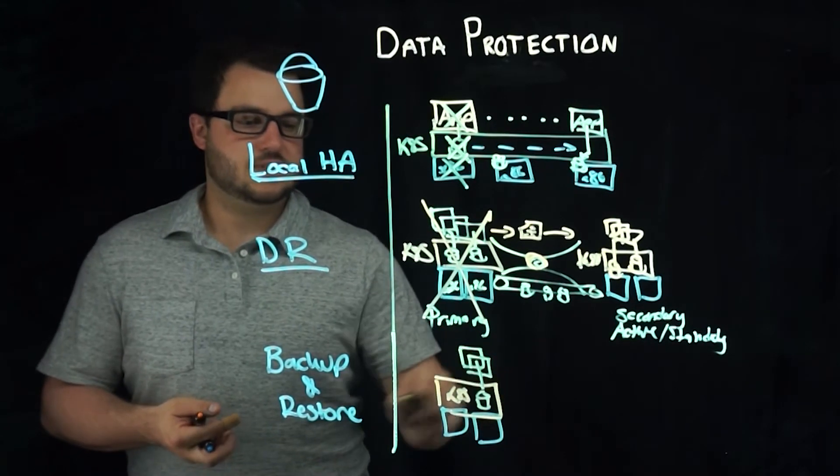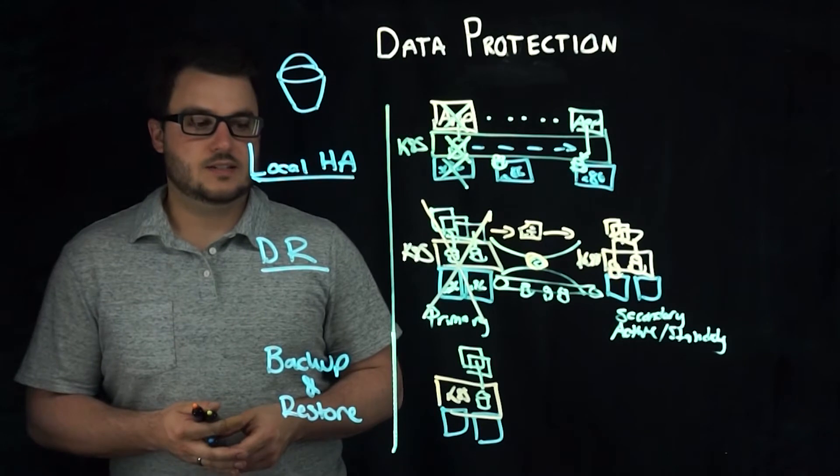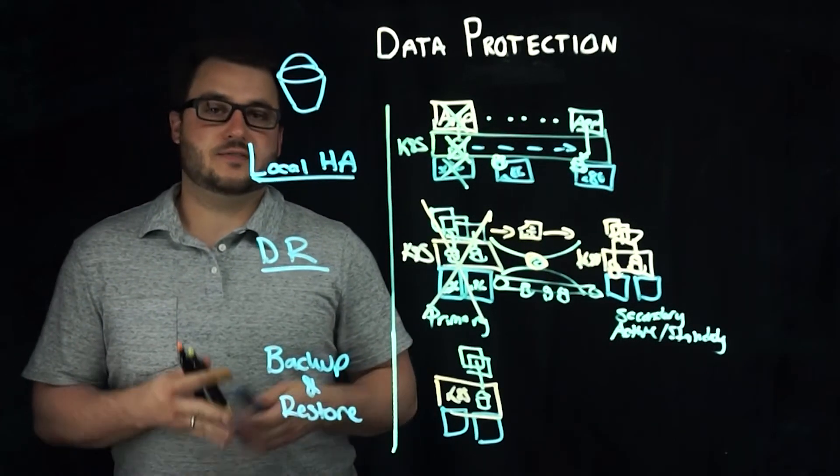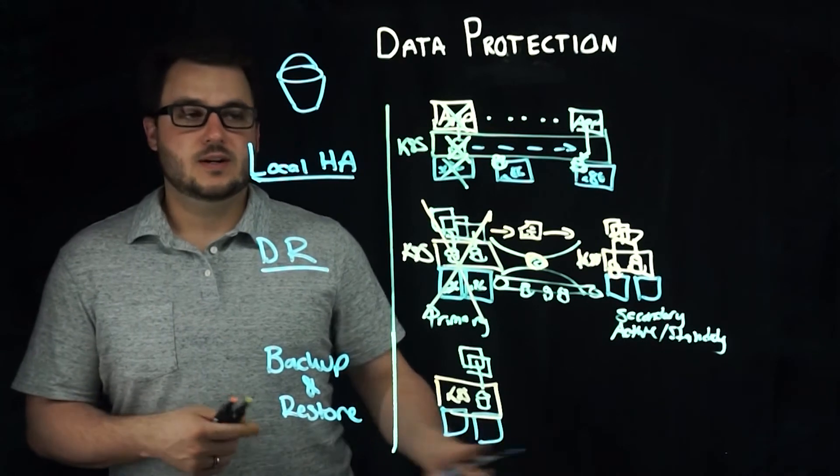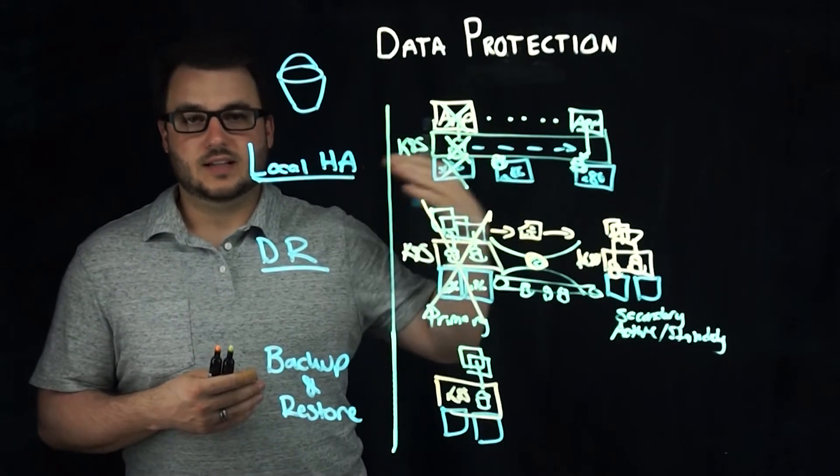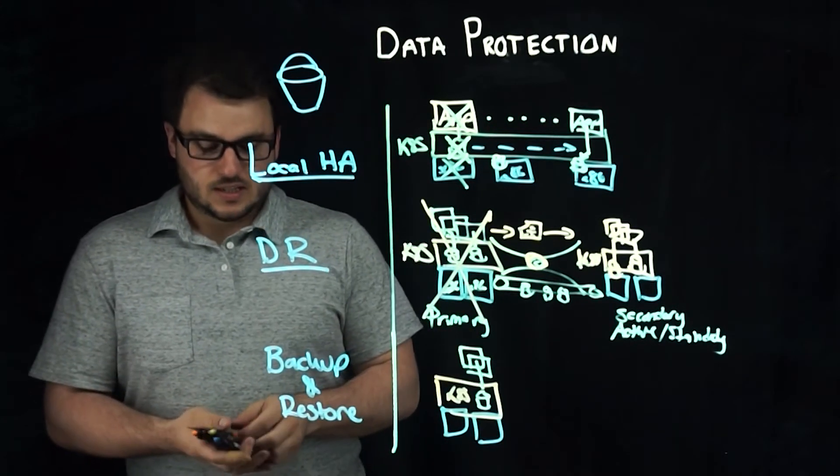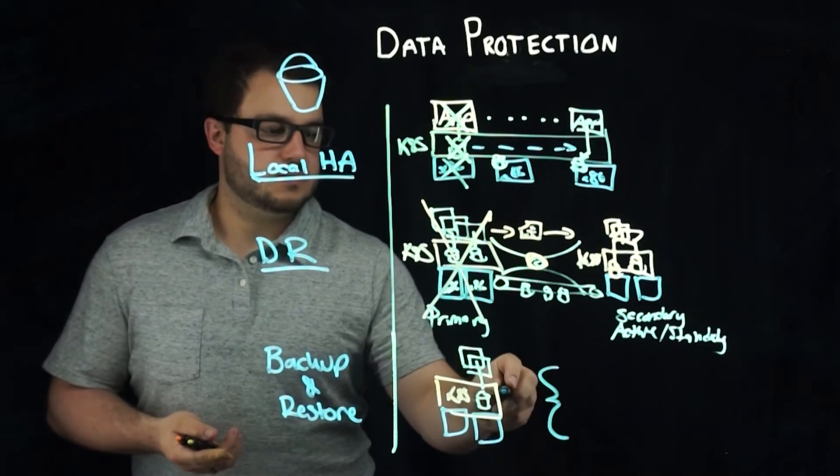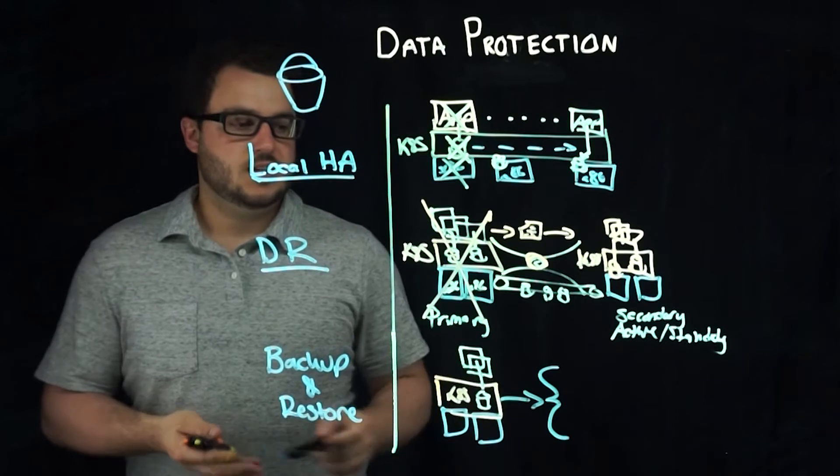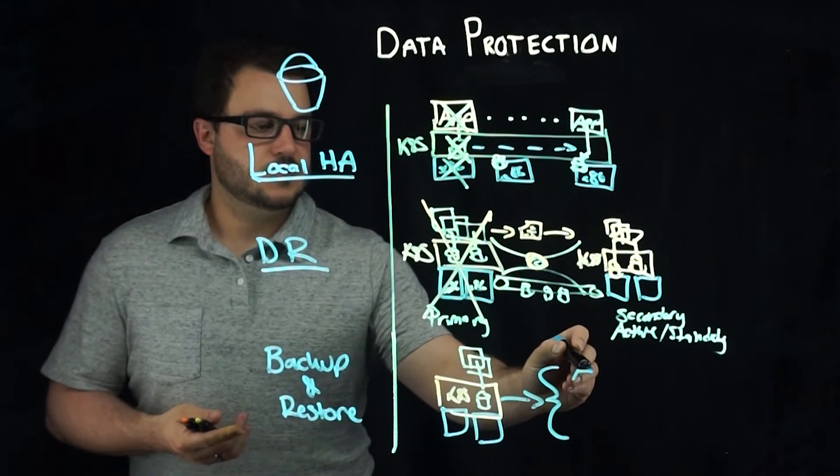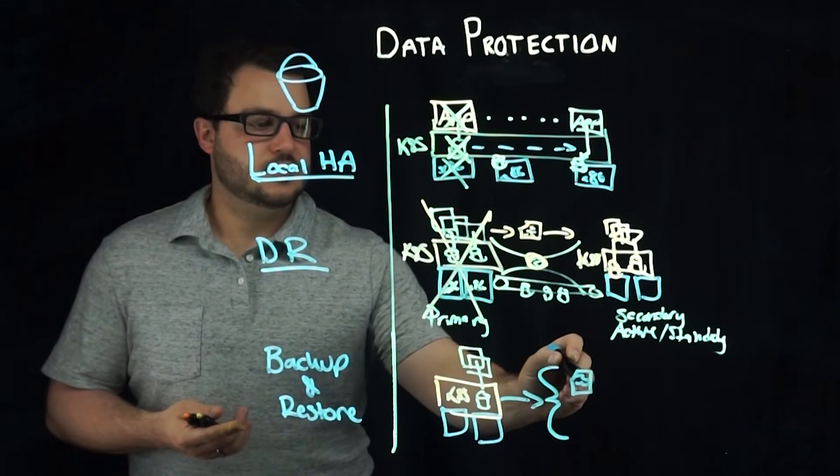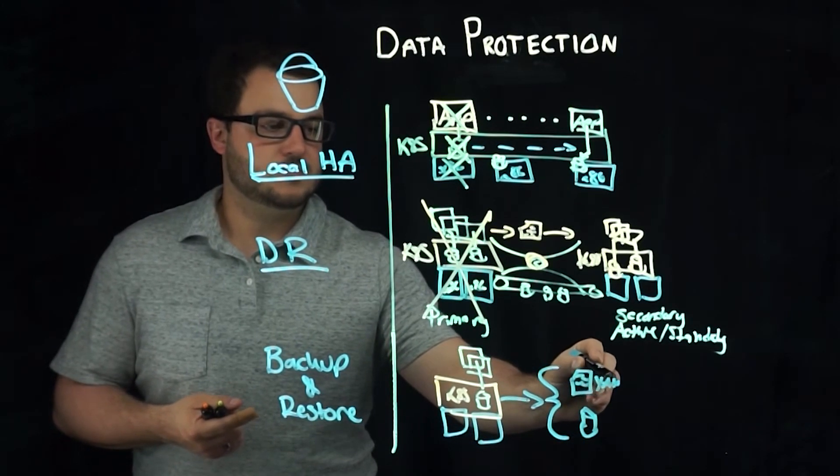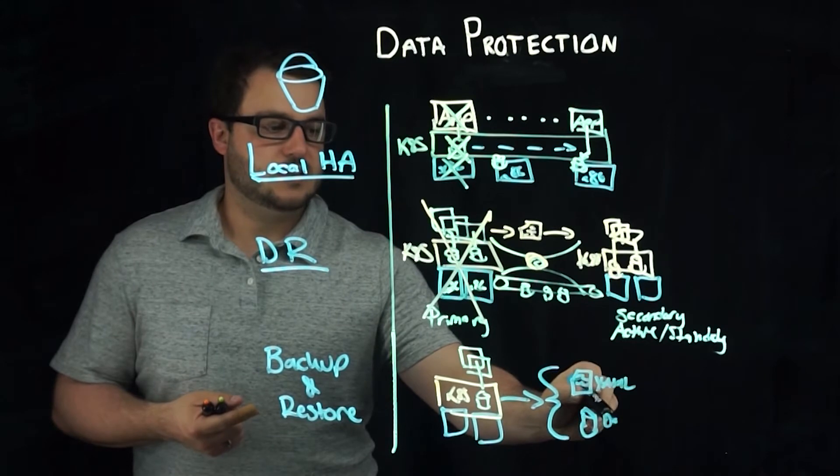A backup is typically somewhere off-site, whether that's in a different failure domain on-prem or in a cloud-based object storage. The key here is that the backup that needs to be taken includes the data and volume, right? So this is the YAML, and this is the data.